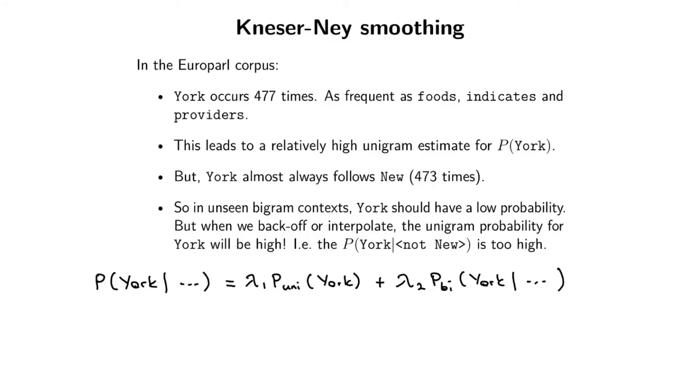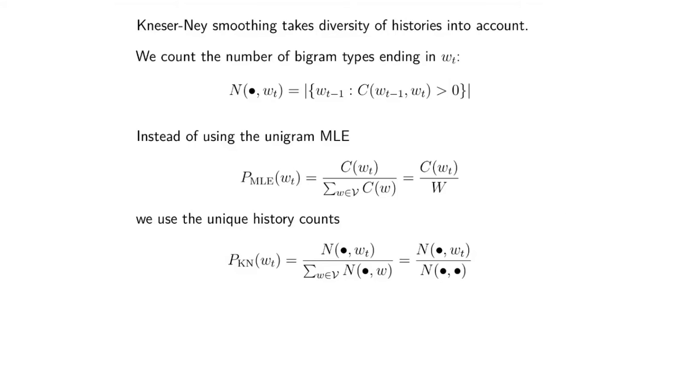What Kneser-Ney smoothing does is it actually takes the unique histories with which a word occurs into account. Basically it says, does this word occur with many different distinct types of preceding words, or does it always occur with just one or two of the words that come before it? So what you do is we're going to count the number of bigram types ending in the specific word that we're looking at. This is just an example for the bigram case, but you can extend it to higher order n-grams as well.